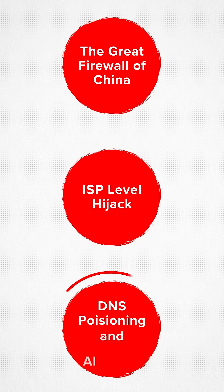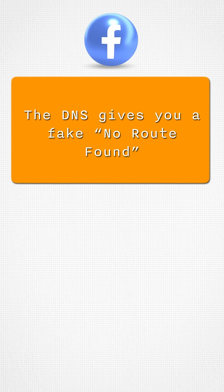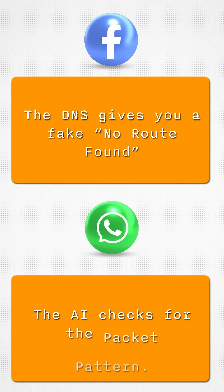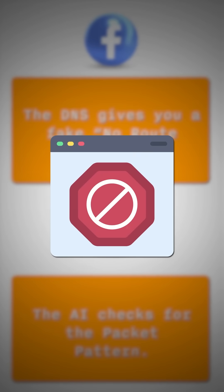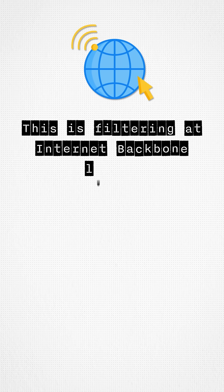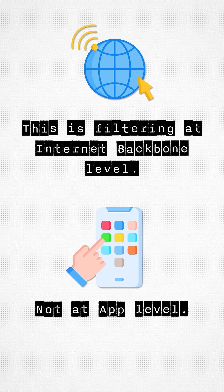The third one: DNS poisoning and AI filters. When you search Facebook, DNS gives you a fake 'no route found.' And when you send WhatsApp messages, the AI checks the packet pattern — and that's how it gets blocked. This is filtering at the internet backbone level, not at the app level.